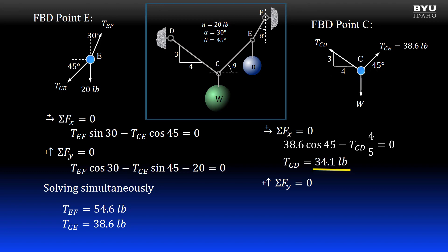Solving for TCD, we get 34.1 pounds. Now in the y direction, we will have 38.6 times the sine of 45 pointing up. We also have the vertical component of TCD pointing up, which is 34.1 times 3 over 5, and we have our unknown W pointing down. I set the equation equal to 0 and solving for W, I get 47.8 pounds.